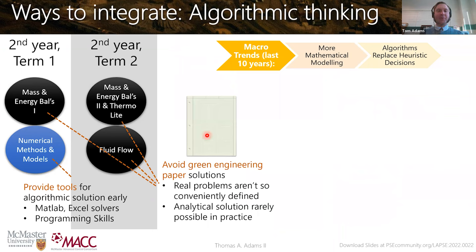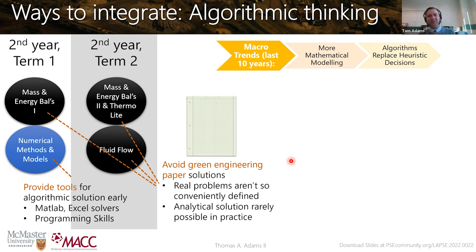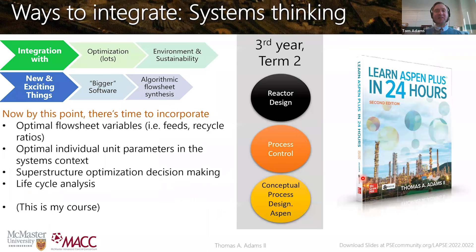One of the main ethos changes is avoiding what I'd call green engineering paper solutions — giving equations and problems manufactured with just the right assumptions so that you work the equations and get a clean analytical solution. We're moving away from that. We want to do things that are more complex, where students can write the model and express the theory without worrying about making things fit into a nice analytical solution. We're really about solver-based, algorithmic solutions. This opens the door to harder things — we even put optimization right into my conceptual flow sheet course.